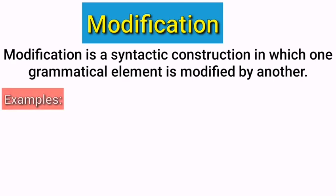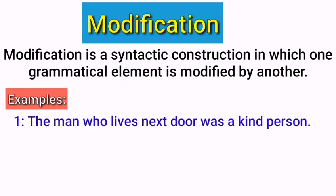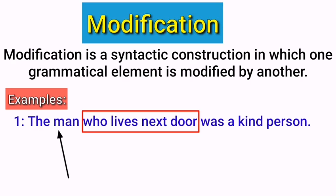Just look at this example: 'The man who lives next door was a kind person.' Here, the group of words 'who lives next door' is a modifier. It is a clause, but this clause modifies the noun phrase 'the man.' It gives us information about the man — because of this clause we can get the idea that the man was a kind person, but specifically the one who lives next door. This is called modification in linguistics.